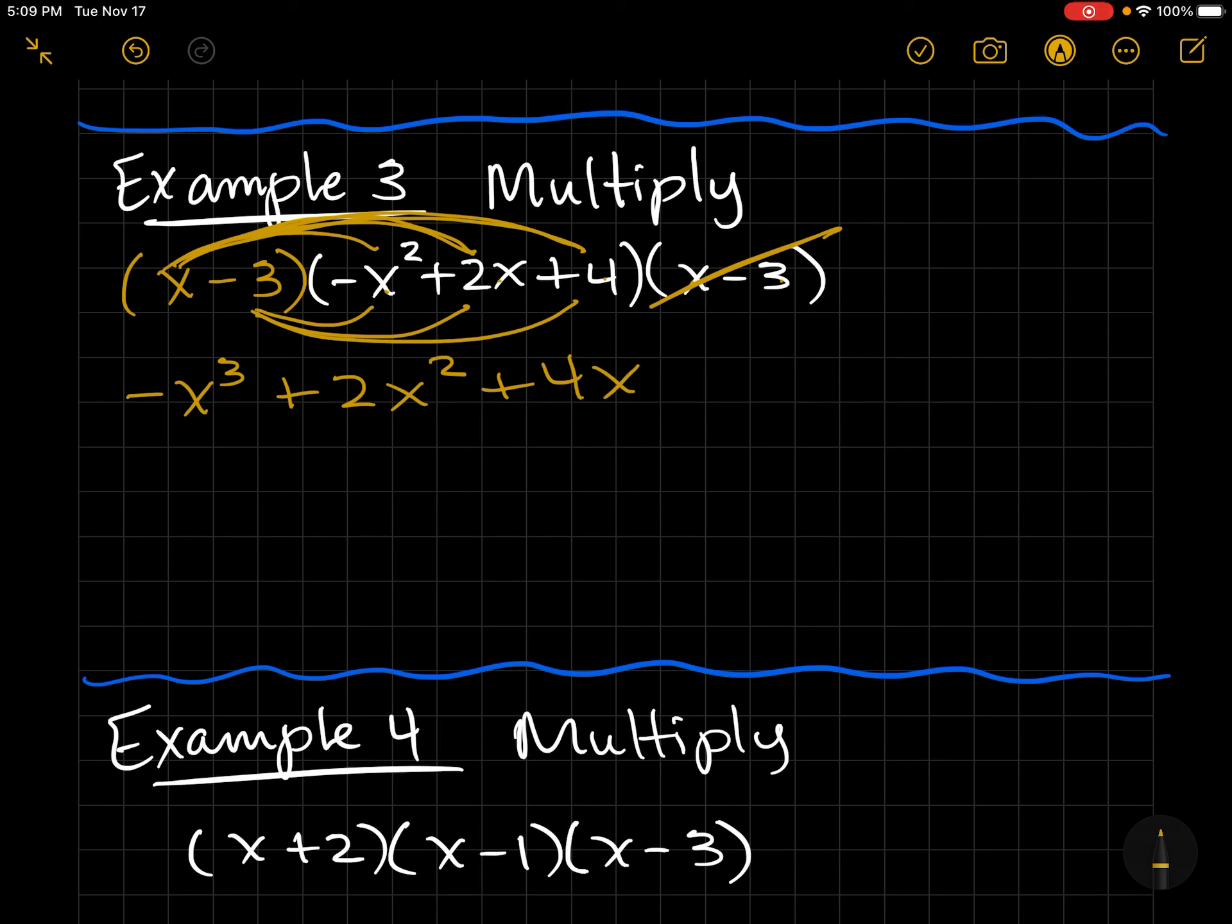Now I'm going to distribute the negative 3 to all three times. So negative times negative is a positive 3x² - 6x - 12. Combine like terms. 5x² - 2x - 12. Final answer.